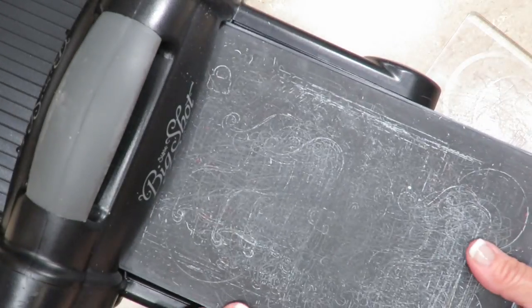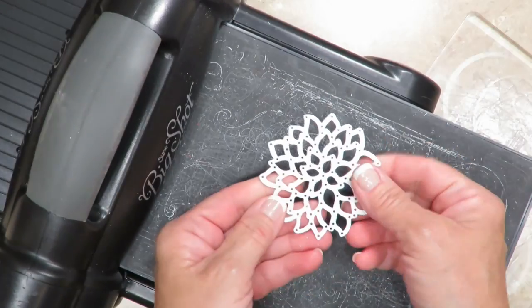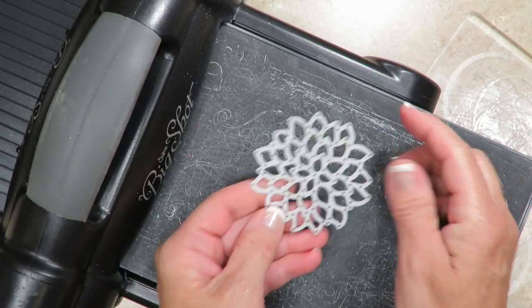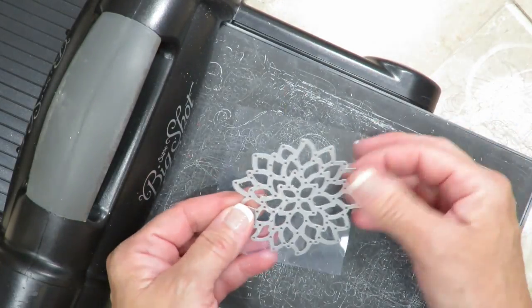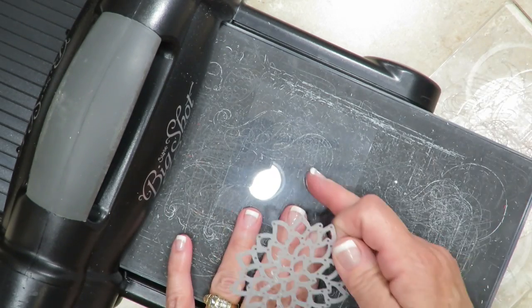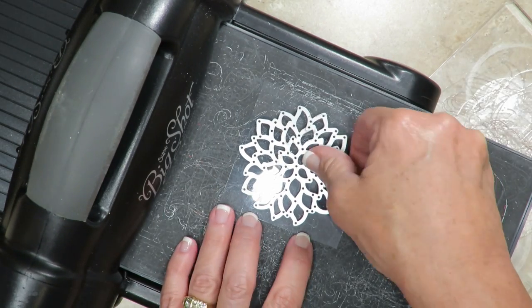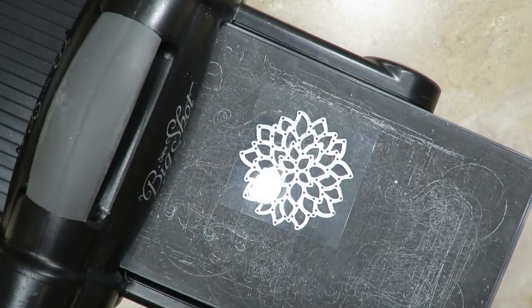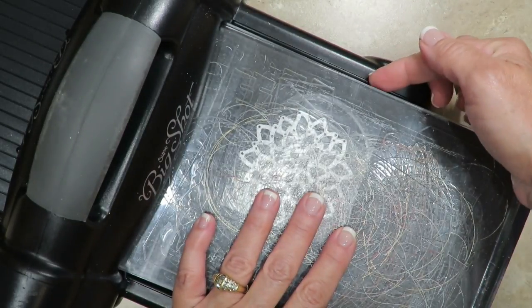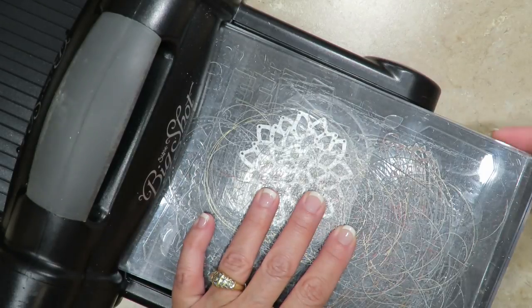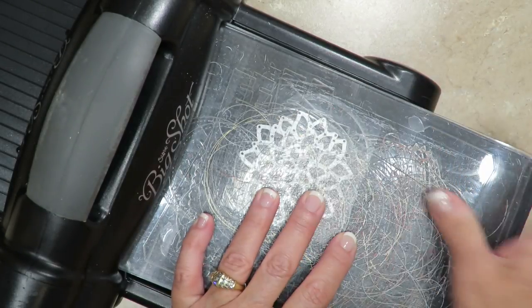This is going to be using also the precision base plate because I have a very intricate die. I have had wonderful success using this to die cut these intricate pieces. So here's my piece of acetate and here is my framelit and a clear mat over the top. Now you won't need a clear mat on the bottom like you're used to simply because the precision base plate takes its place.